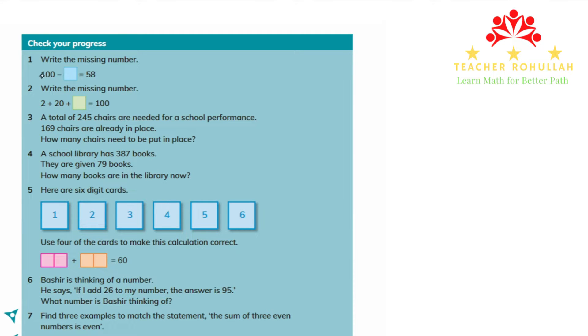The first question is asking us to write the missing number. We have 100 minus something equals 58. To answer this question, I'm going to solve a very easy one. Suppose if we have 12 minus 4, we get 8. Now we have 8 but we don't have 4. For example, if we have 12 minus something equals 8, we can simply subtract 8 from 12. We can write 12 minus 8 equals 4. In this case, we have 100 minus something equals 58. The same way that we subtracted 8 from 12, we can subtract 58 from 100.